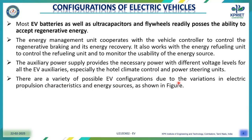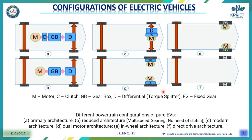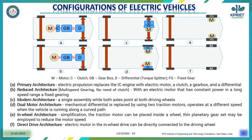There are a variety of possible EV configurations due to variations in electric propulsion characteristics and energy sources. This shows the different power train configurations of a pure electric vehicle. In the diagram, M represents the motor, C represents the clutch, GB represents the gearbox, D represents the differential (torque splitter), and FG represents the fixed gear. There are majorly six architectures available in the configuration of electric vehicles.